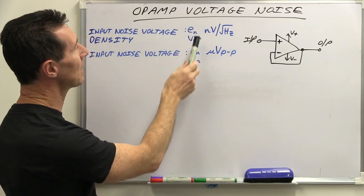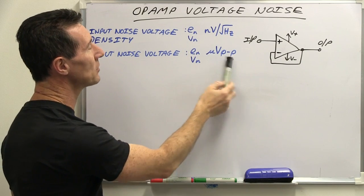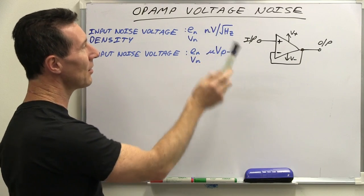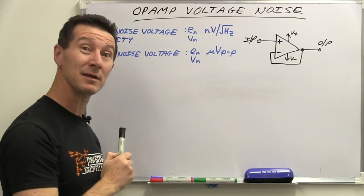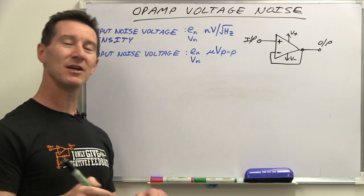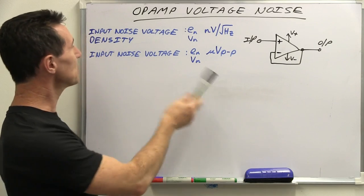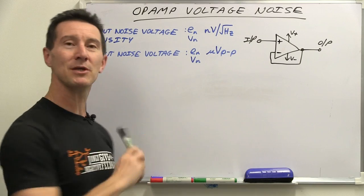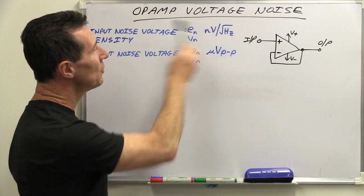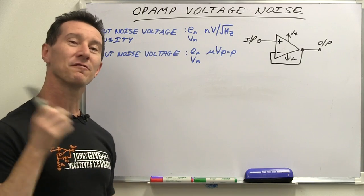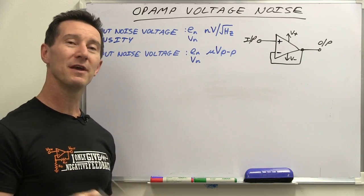It's labeled exactly the same — EN, VN — exactly the same, but instead of microvolts peak-to-peak, we've now got a value in nanovolts per root hertz. What does that mean? In a nutshell, it's spectral density — the density of the noise over a specific spectrum or frequency range, just like our input voltage noise was measured from 0.1 Hz to 10 Hz. This unit actually needs a frequency range over which it's going to be valid. Otherwise, it's a meaningless figure.